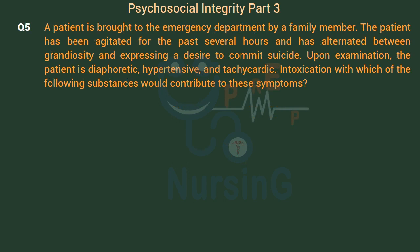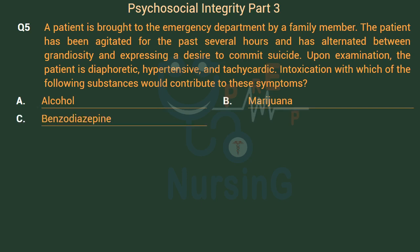A patient is brought to the emergency department by a family member. The patient has been agitated for the past several hours and has alternated between grandiosity and expressing a desire to commit suicide. Upon examination, the patient is diaphoretic, hypertensive, and tachycardic. Intoxication with which of the following substances would contribute to these symptoms? Option A: Alcohol. Option B: Marijuana. Option C: Benzodiazepine. Option D: Methamphetamine.